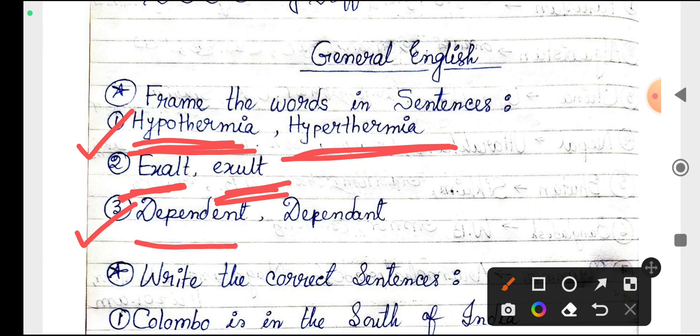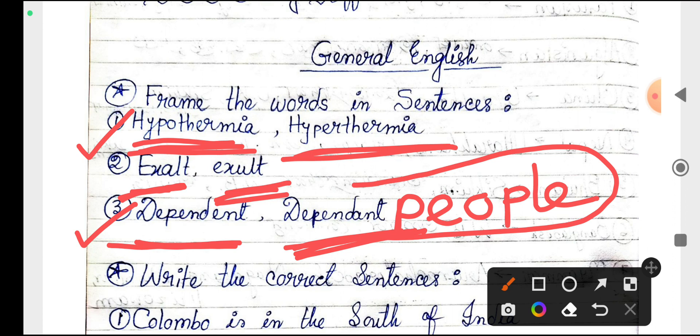Next, dependent and dependent. Actually, dependent is an adjective and dependent is a noun. So if I say dependent people, totally is a noun. But dependent people I won't say it, because dependent is an adjective.